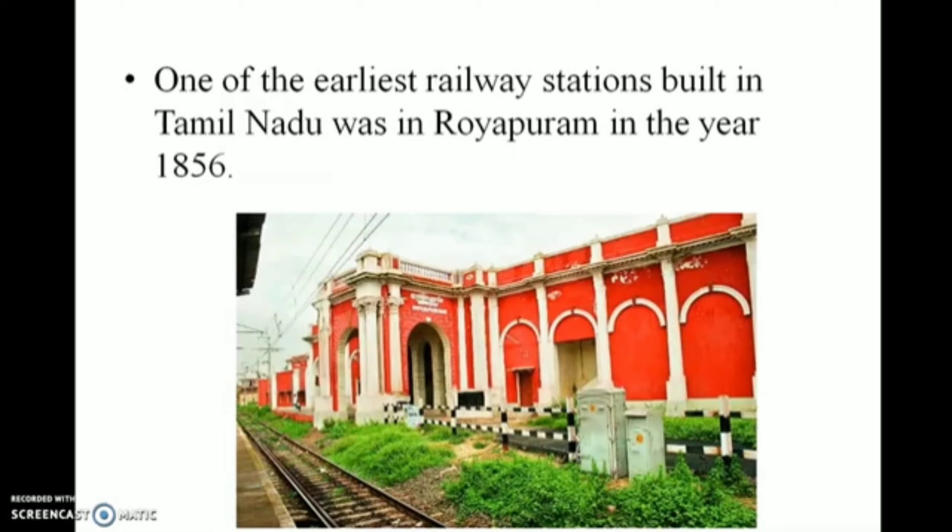One of the earliest railway stations built in Tamil Nadu was in Royapuram in the year 1856. There are many express trains running between major cities — for example, the Himsagar Express from Kanyakumari to Jammu. There are also suburban rails that connect different places within a city. The first modern rapid transit system in India is the Kolkata Metro Rail System. The Chennai Metro Rail was started in the year 2015.